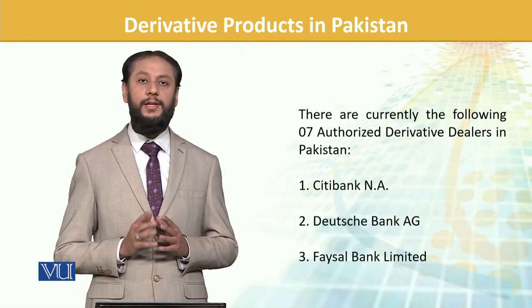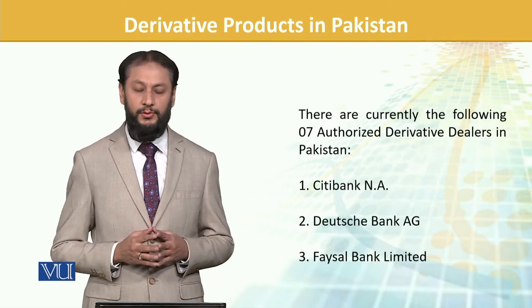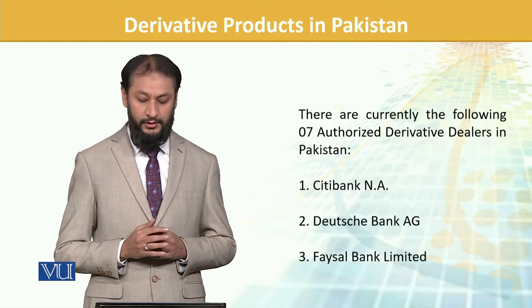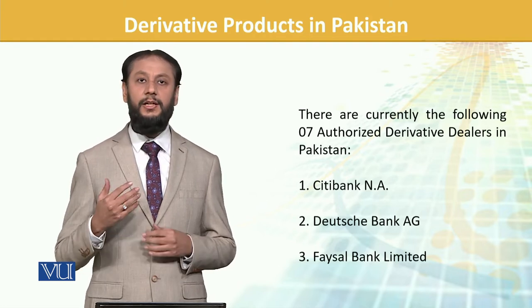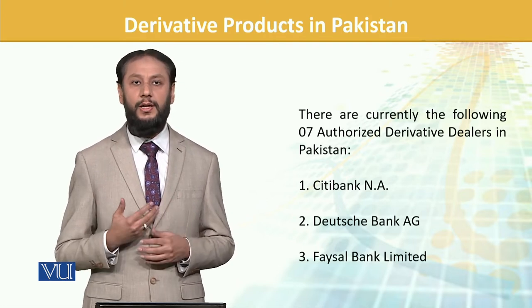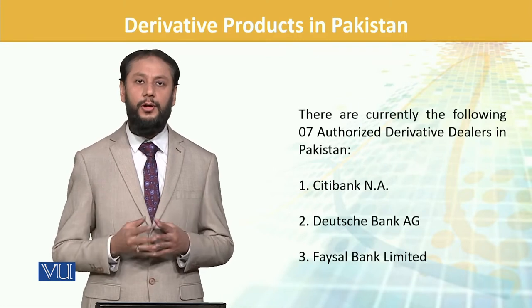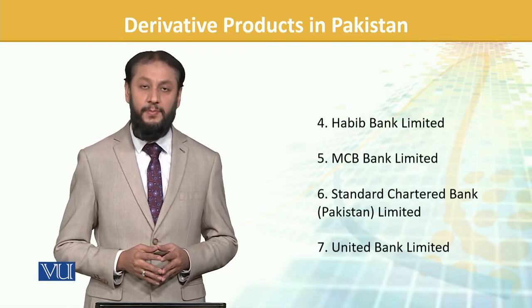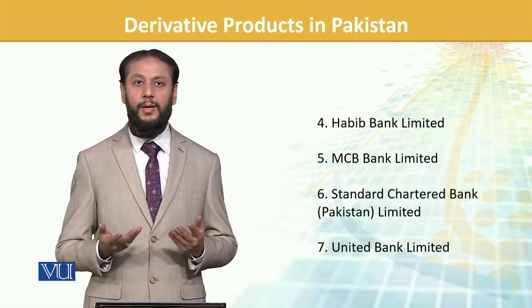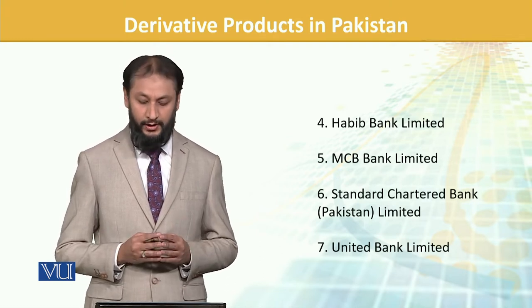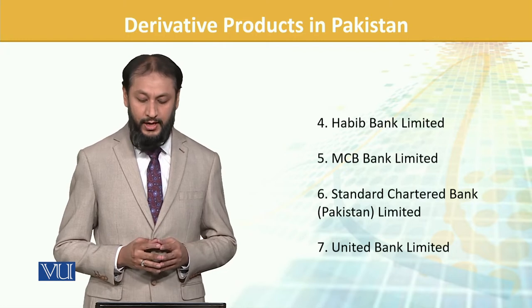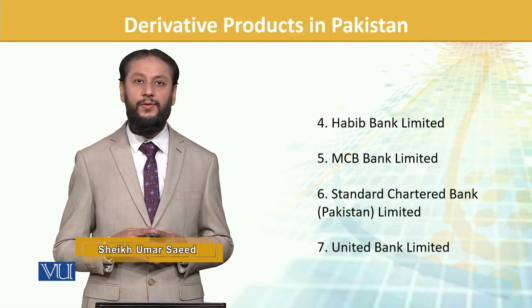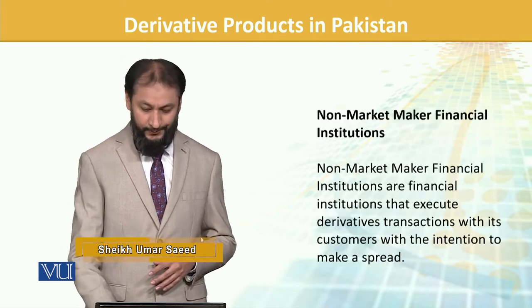There are currently seven authorized dealers, and this number varies from time to time. These are: Citibank, Deutsche Bank, Faisal Bank — their inclusion basically depends on their expertise, international linkages, and products they have developed. Then we have Habib Bank, MCB Bank — names you should be familiar with — Standard Chartered Bank Pakistan, and UBL (United Bank). These are the main players authorized as derivative dealers.